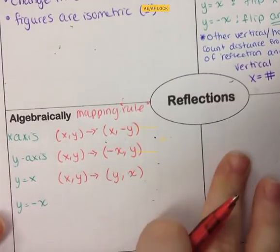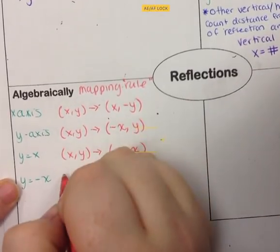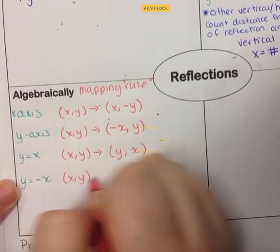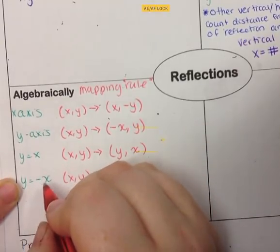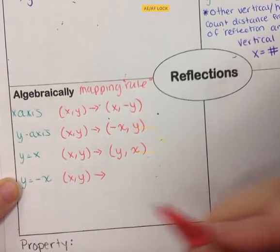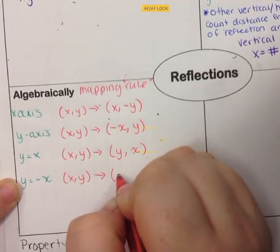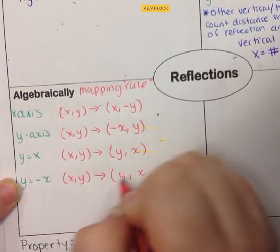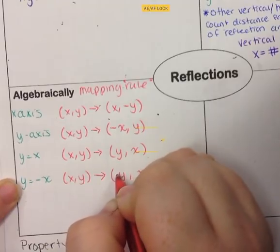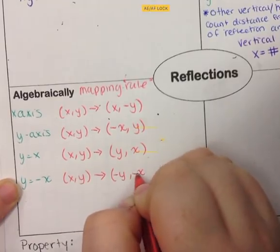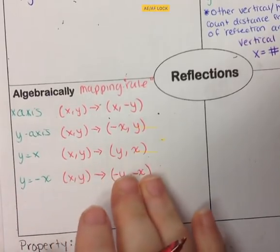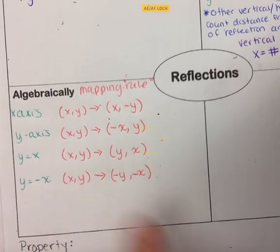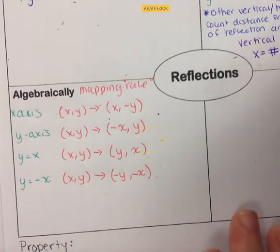For y equals negative x, we start with the pre-image (x, y) and both flip and negate. We flip to get (y, x), then negate both: (x, y) maps to (-y, -x). Both values change signs — positive becomes negative, negative becomes positive. You can do the flip and the sign change as two separate steps if that's easier.